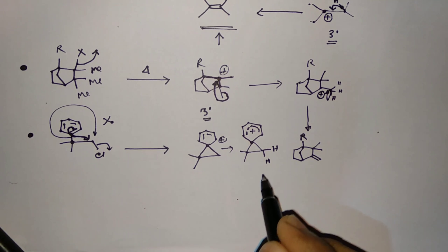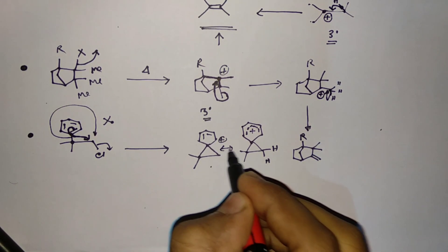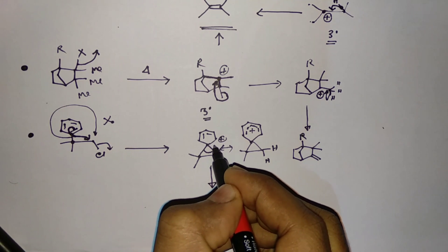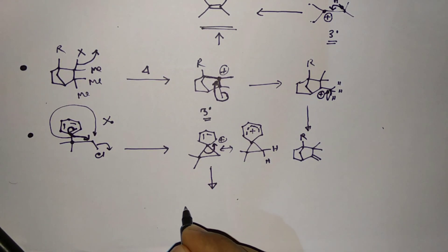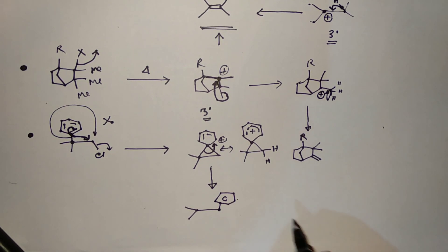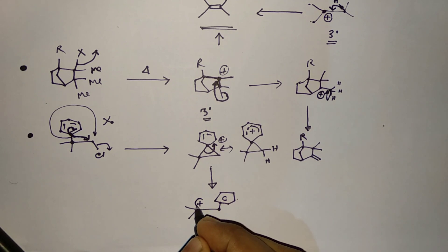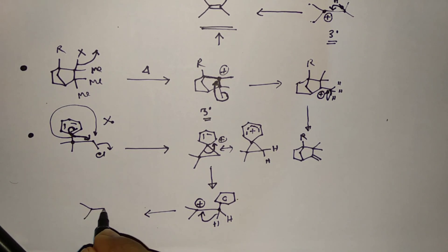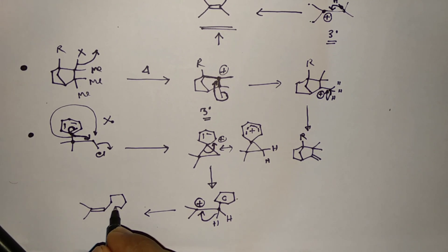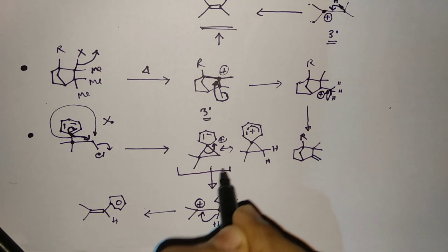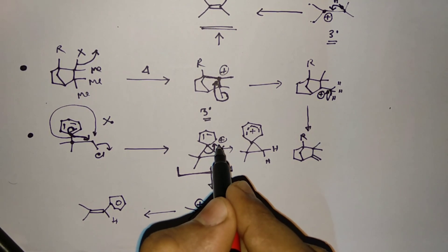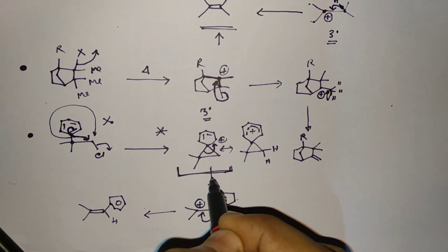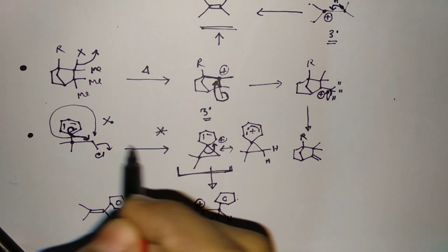Since this is a resonance-stabilized system, the positive charge can be neutralized. With two hydrogen atoms present, deprotonation occurs and we get the final product. This intermediate is resonance stabilized and is much more stable than what would form in methyl or hydrogen migration, where no resonance is possible. That is why phenyl group migration is much more favorable.